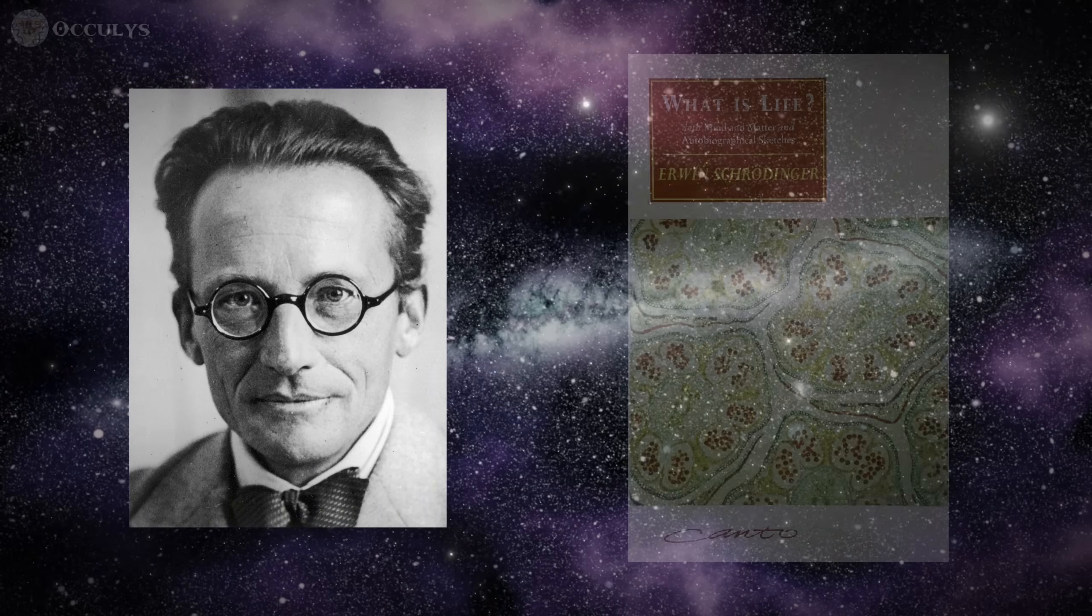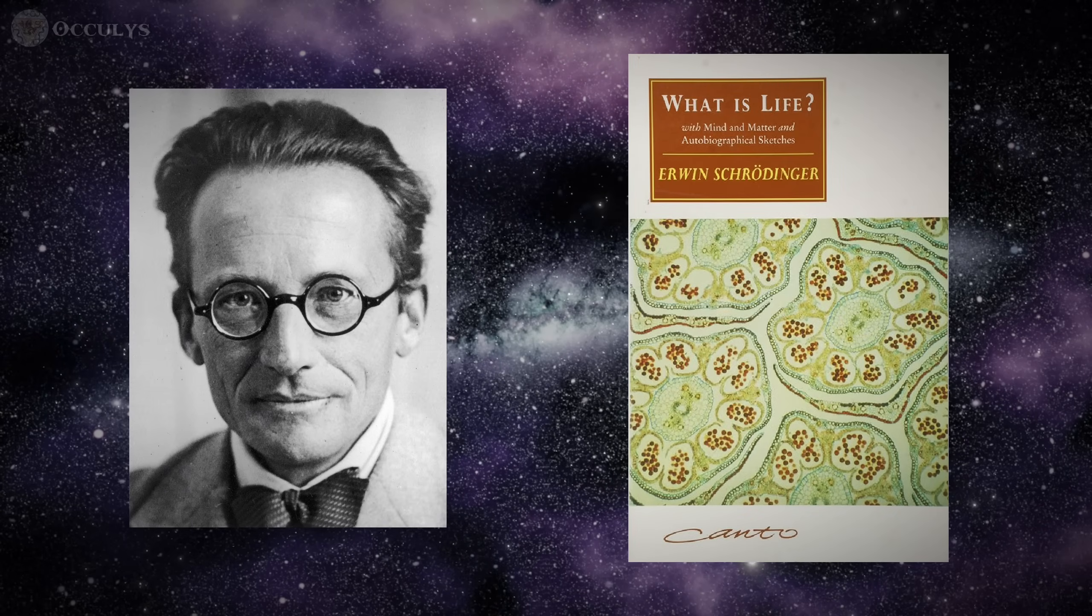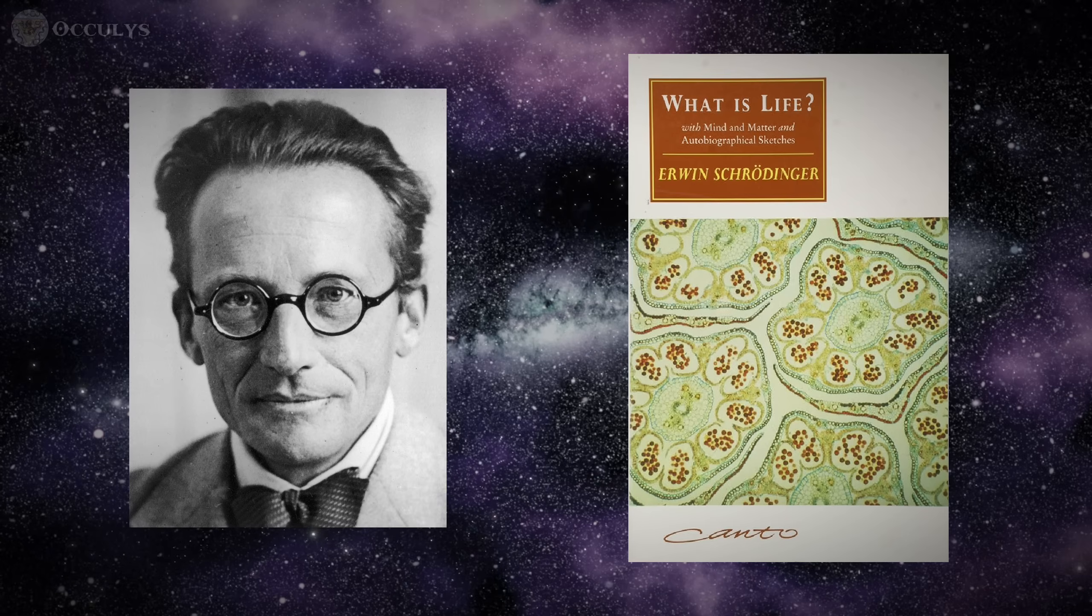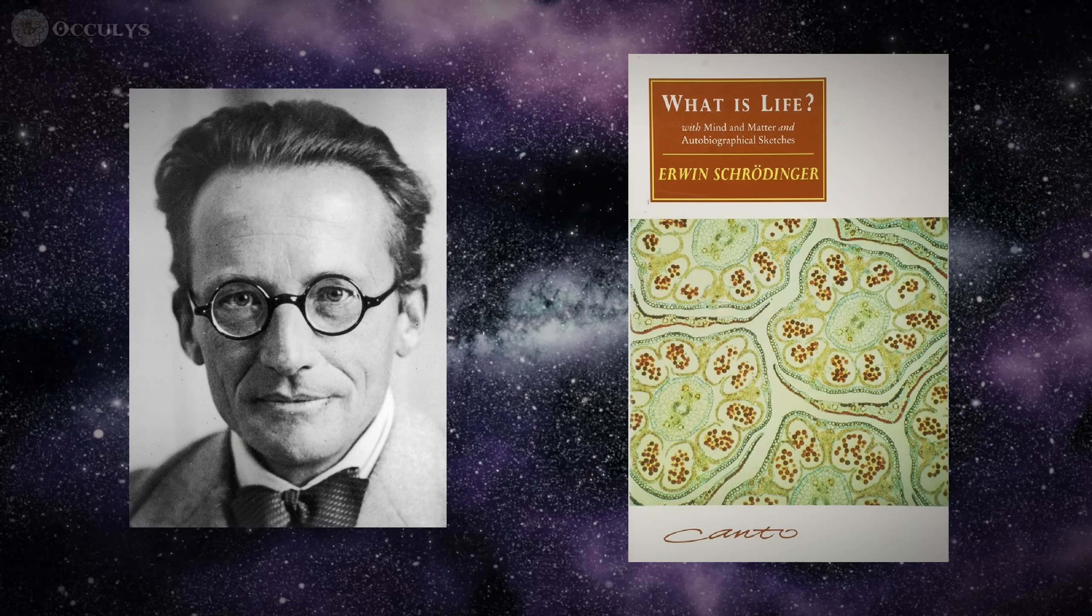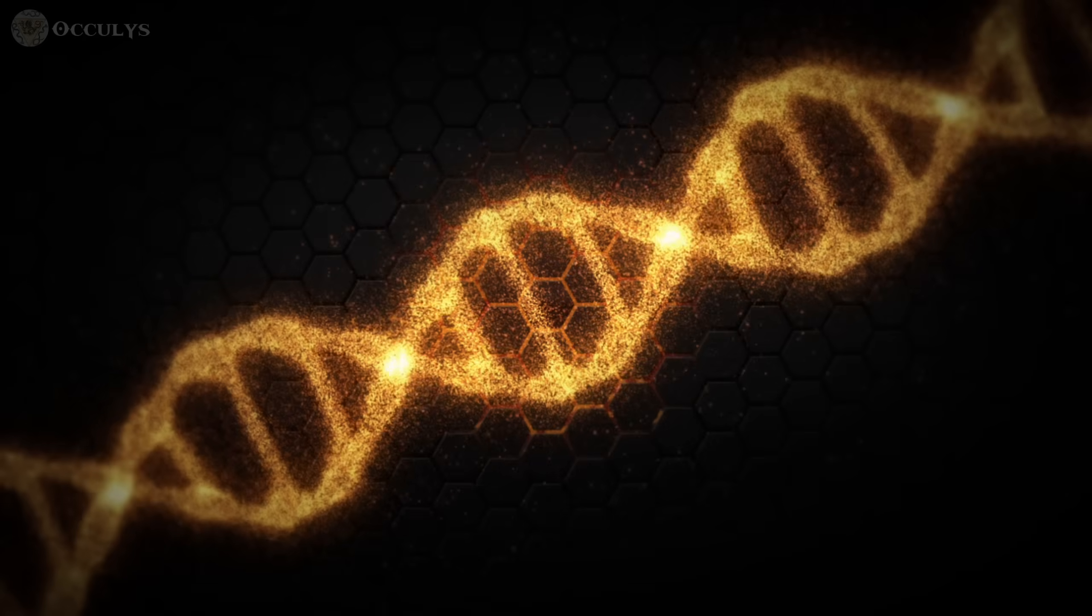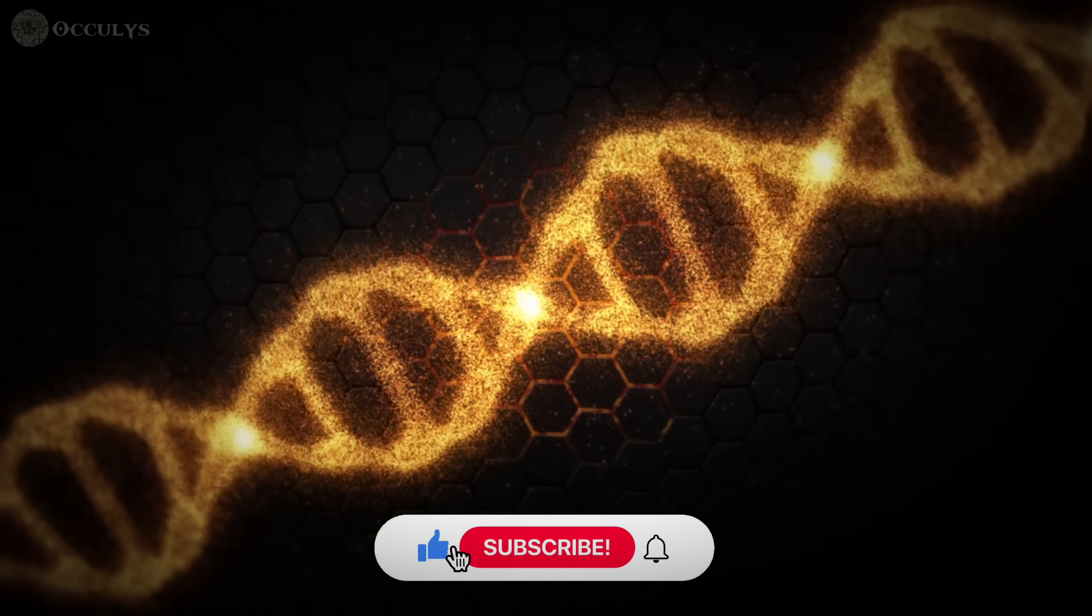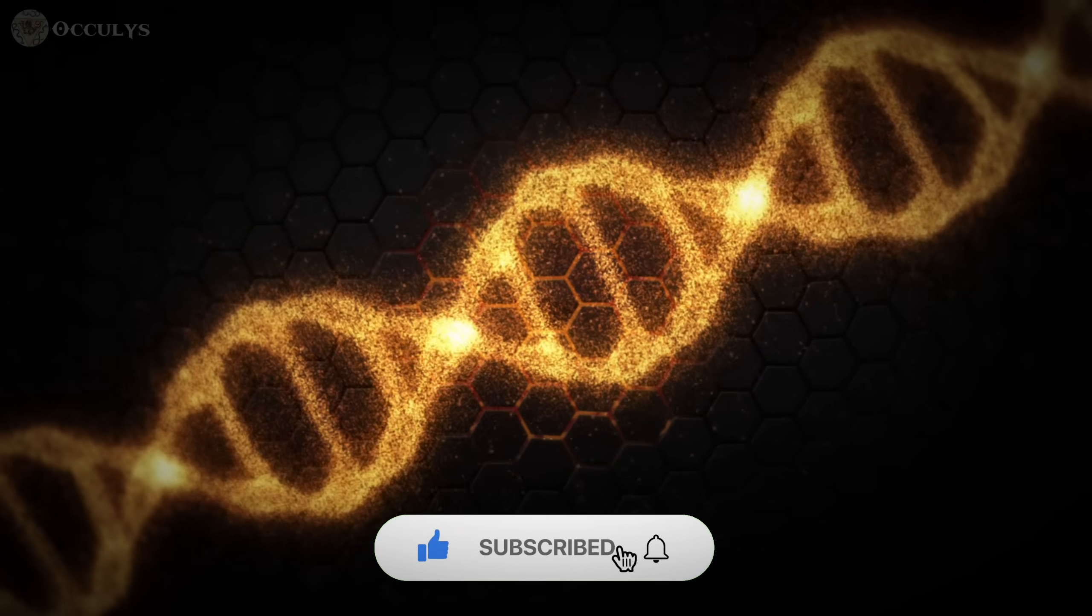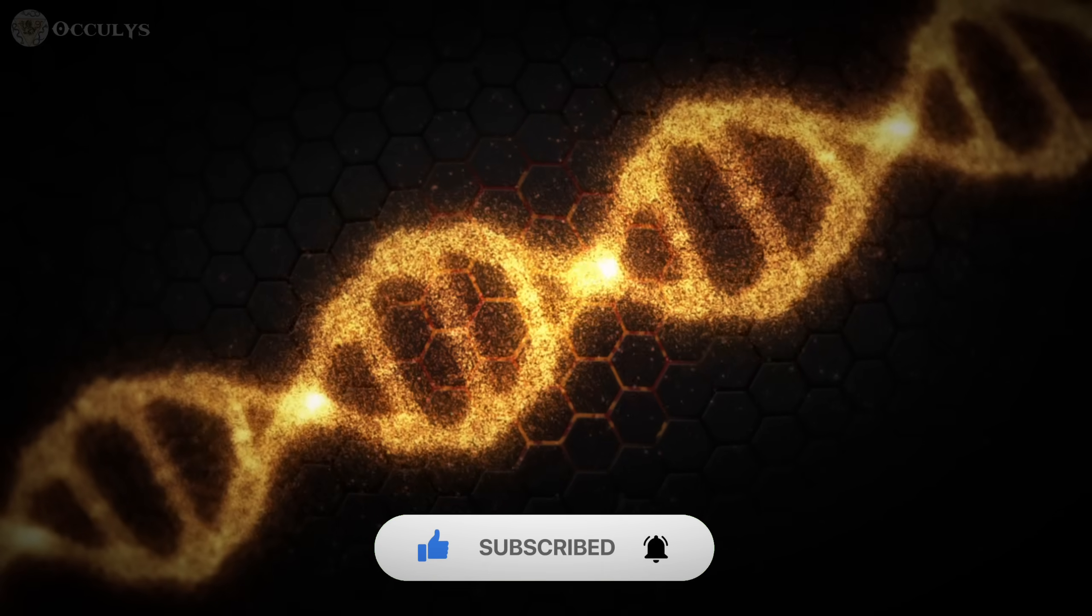In his seminal book, What is Life?, he speculated that the remarkable order and unity of a living organism might arise from quantum coherence. He also famously proposed that the blueprint for life, the genetic code, must be stored in what he termed an aperiodic crystal. This was a structure capable of holding vast information, a prediction stunningly confirmed by the discovery of DNA.